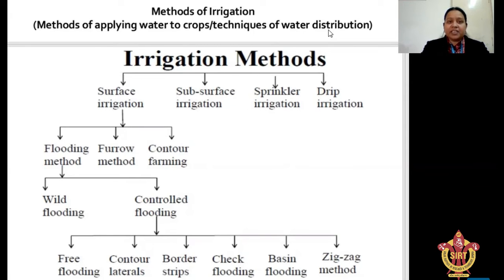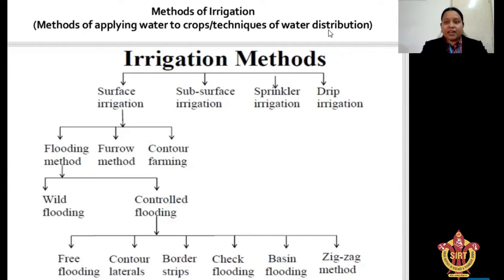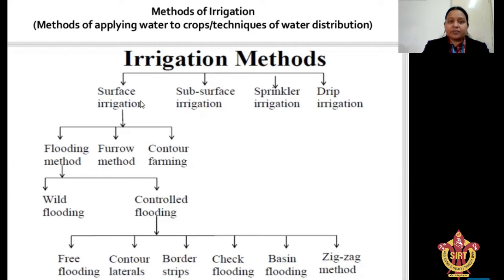Basically, we have divided irrigation into two parts. In the previous class we had discussed that there are two types of irrigation. First one is the surface irrigation and second one is the subsurface irrigation. We have divided the irrigation method into these two categories.